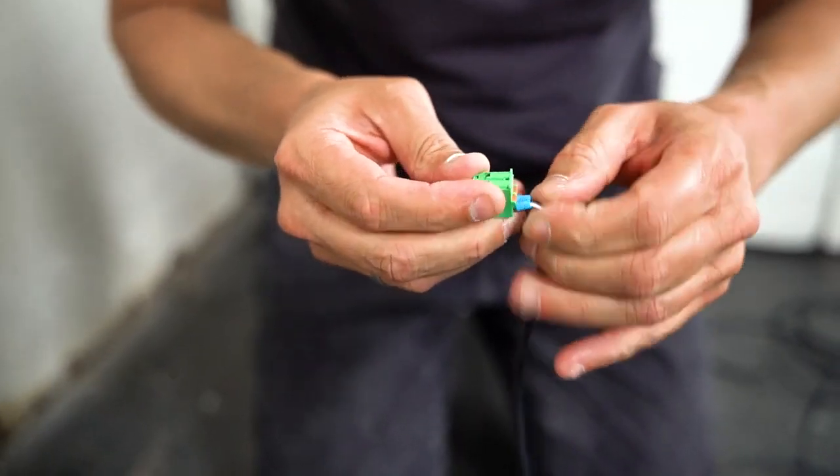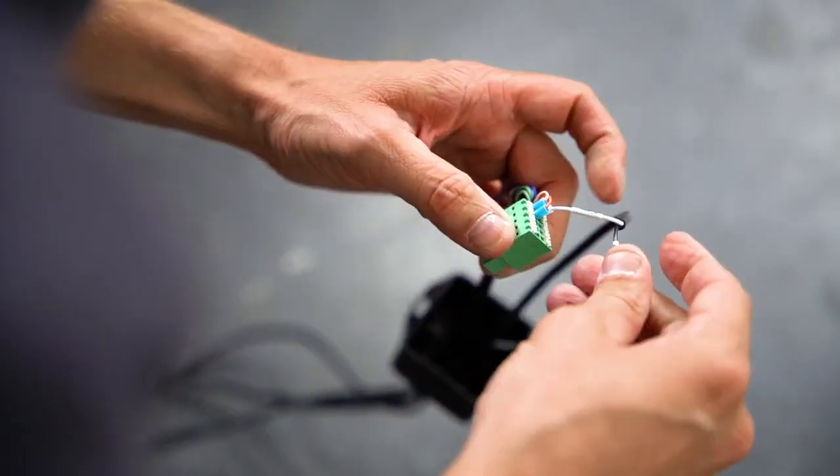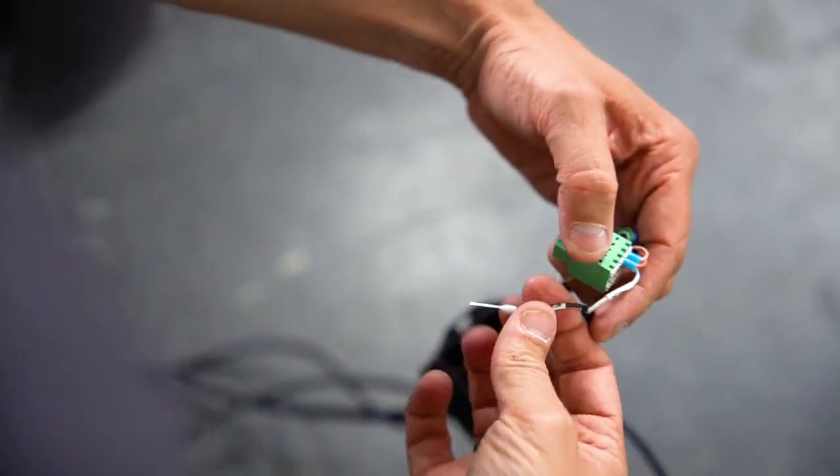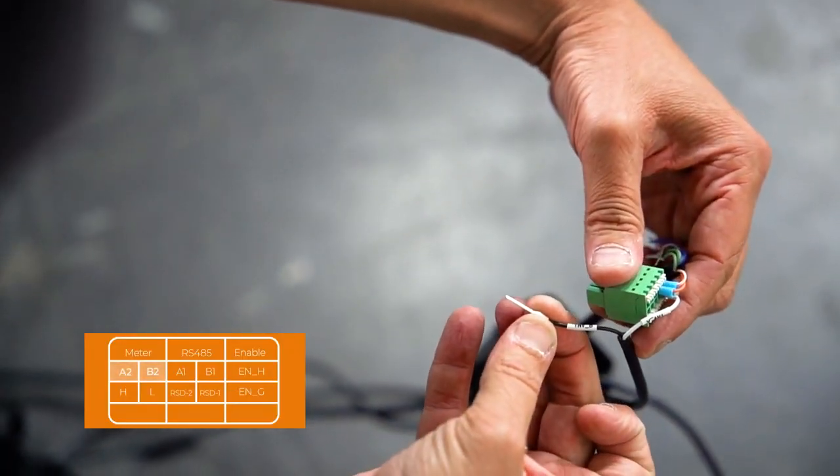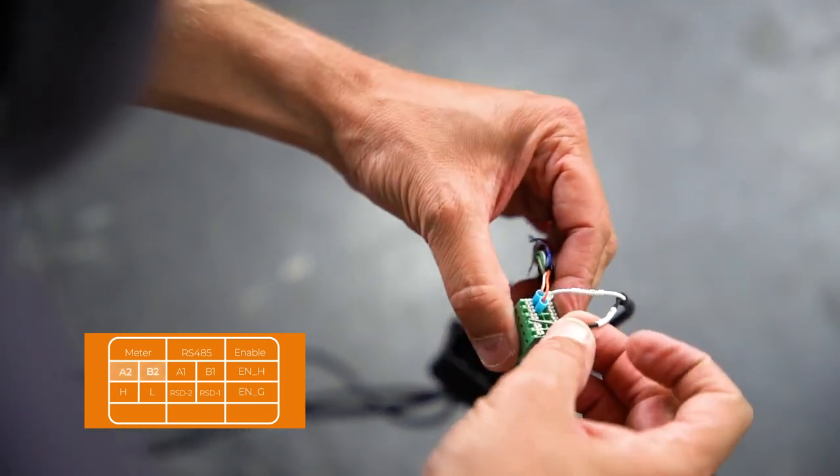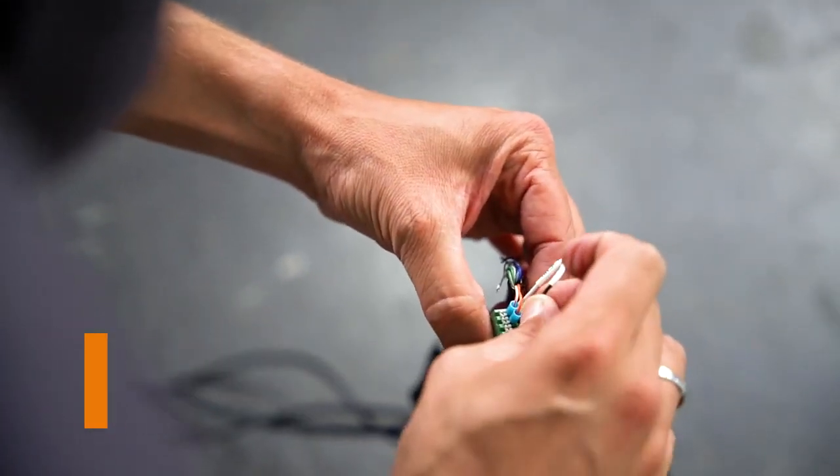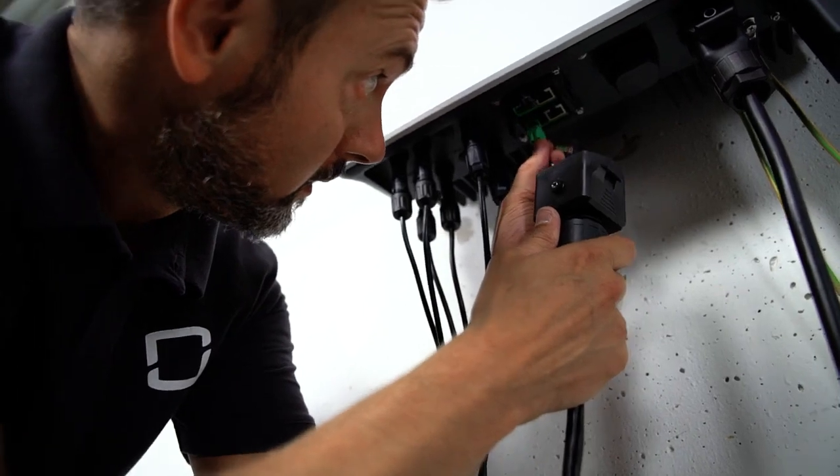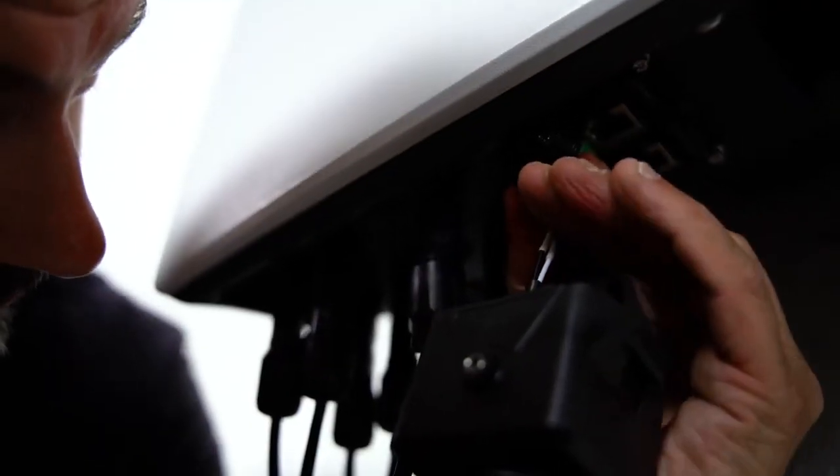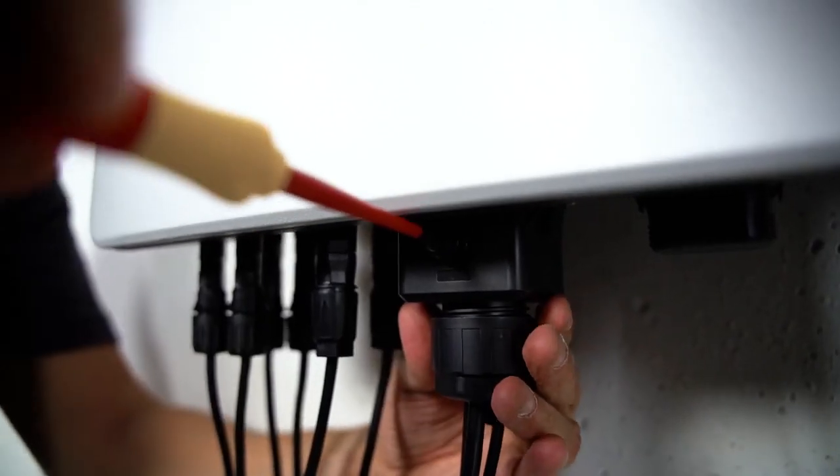In the next step, let's have a look at the smart energy meter. RS-485A has to be connected to port A2 and RS-485B to port B2. Plug everything together and fix it with an M4 screw.